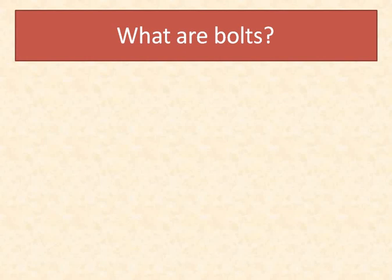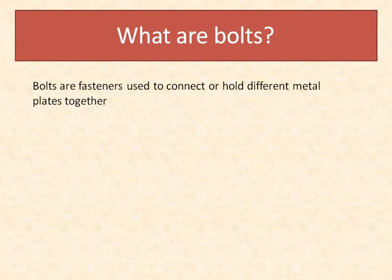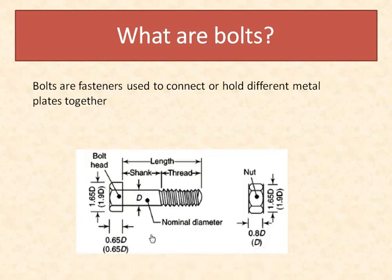We are connecting steel members, but how to connect? We will need some fasteners, and these are the bolts. Bolts are nothing but fasteners which are used to connect or hold different metal plates. You will see in this figure — this portion is known as your shank area, this is the thread, and from here the bolt head. From the bolt head to the bottom portion is known as the length of the bolt. This is the nominal diameter — that means if you are told a bolt of 16 mm diameter or 20 mm diameter, that means the diameter of this portion is the bolt diameter. This can be hexagonal. Then this is the nut, and nut sizes are also mentioned here.